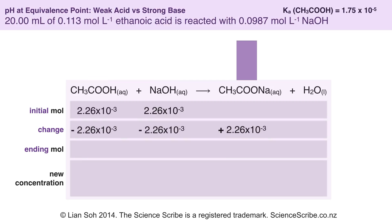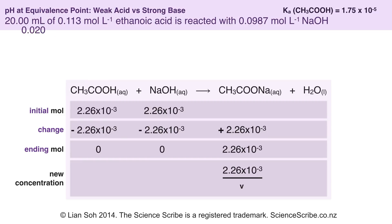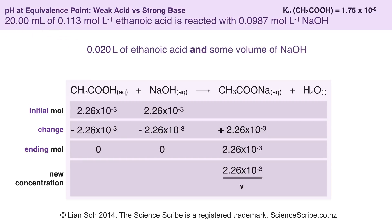We can update our ICE table by calculating how many moles of each species are left at the end. To work out the new concentration we come back to C = N/V — this time I'm trying to work out the concentration of sodium ethanoate. I've already worked out the moles; now I need to work out the new total volume. I started with 0.020 litres of ethanoic acid and I would have added some volume of sodium hydroxide, so I need to work out what that volume was.